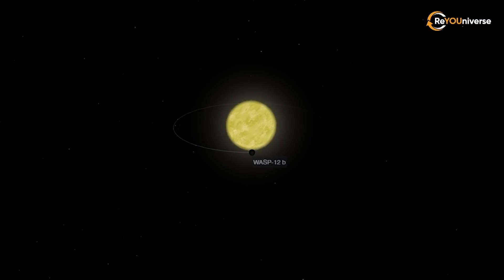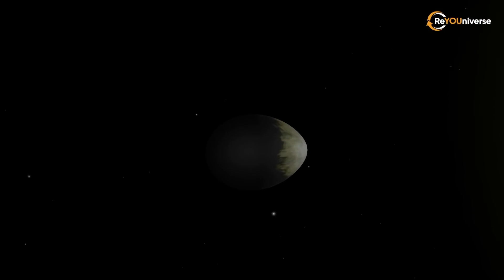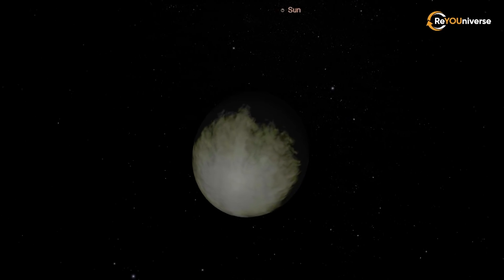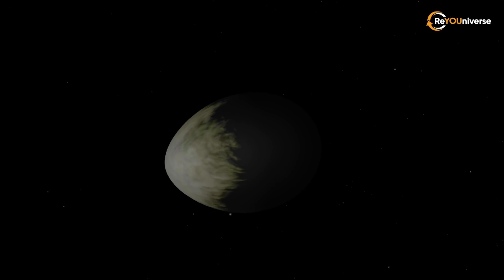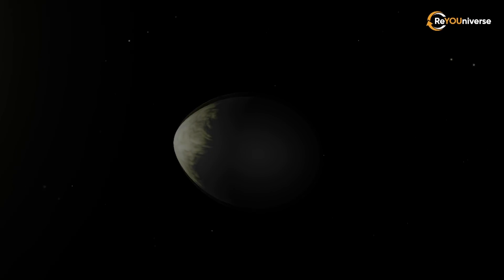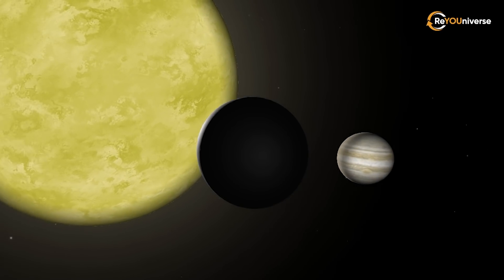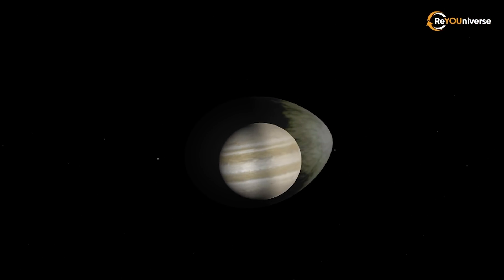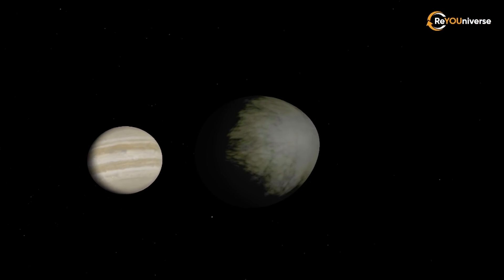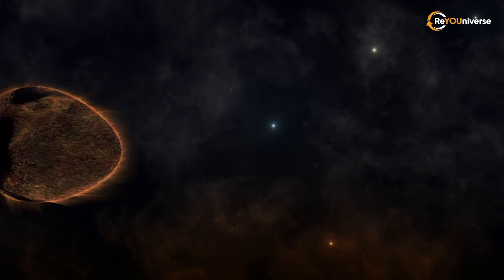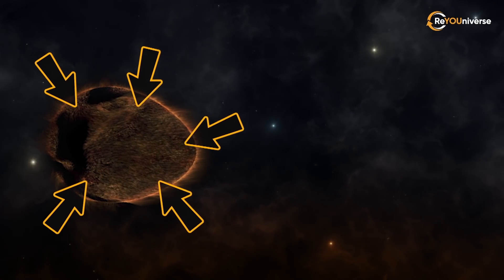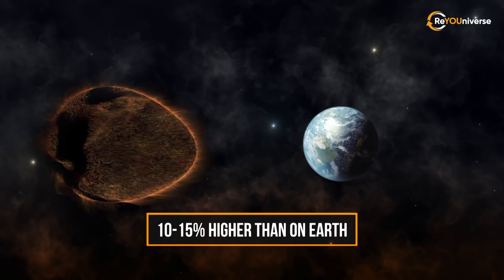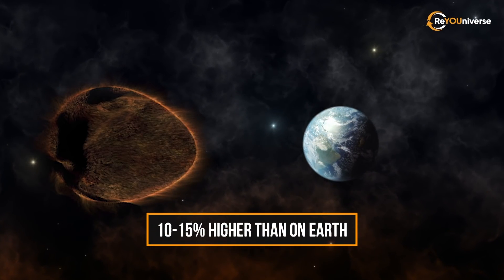Being so close to its star, the planet creates yet another interesting effect. Unlike most planets, it's not round, but rather egg-shaped. Since WASP-12b is 1.5 times heavier than Jupiter, but is almost two times larger, it has one of the lowest densities ever found. It is so low that the gravity on its surface is comparable to ours, being about 10 to 15 percent higher than on Earth.